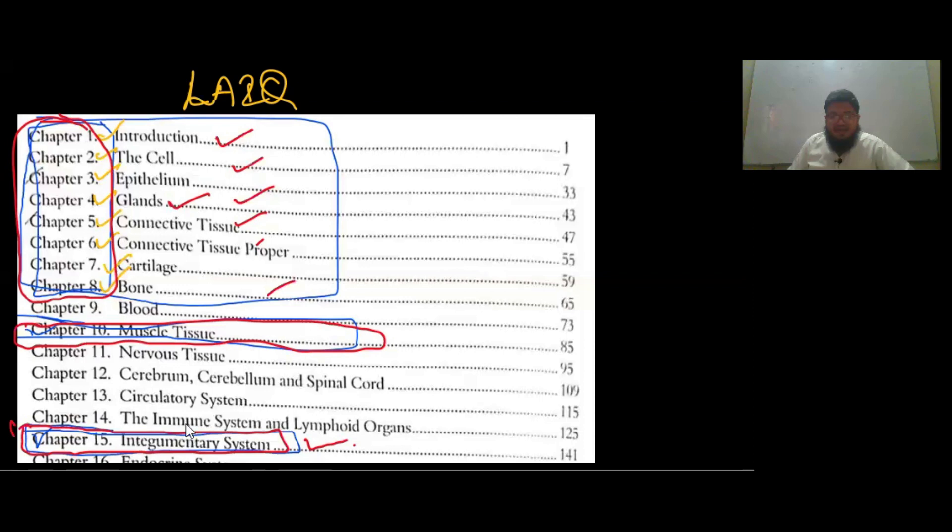If you cover all of this—the first eight chapters, then muscle tissue, then integumentary system—this makes a total of 10 chapters from Likosit Siddiqui.